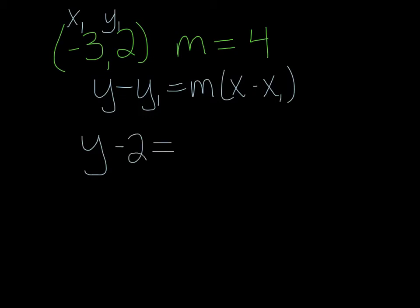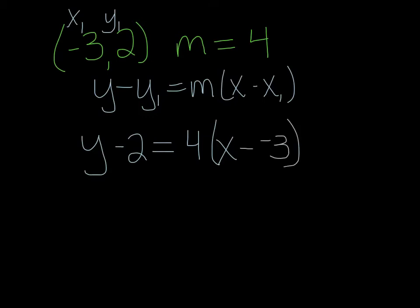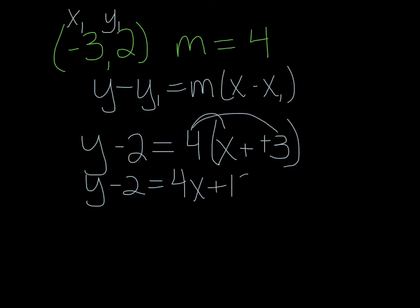Our slope is 4, so I'm going to put a 4 there. This x does not have a subscript, so it's going to stay an x. This x has a subscript of 1, so x1 is negative 3. I'm going to bring down my minus, and then negative 3 is my substitution. Now this is a distributive property. So I have y minus 2 equals — I have to distribute my 4. 4 times x is 4x, and then remember this is minus and negative, so it becomes plus. 4 times 3 is 12.